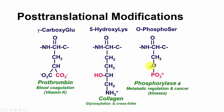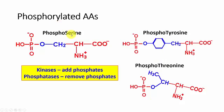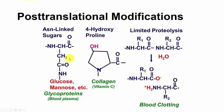Phosphoserine, phosphotyrosine, and phosphothreonine are important modifications for metabolic regulation — including cancer and kinase signaling. Kinases add phosphate groups; phosphatases remove them. This will be discussed more as the semester progresses.